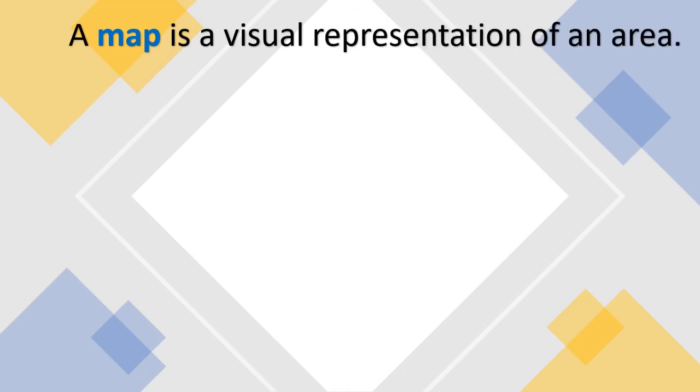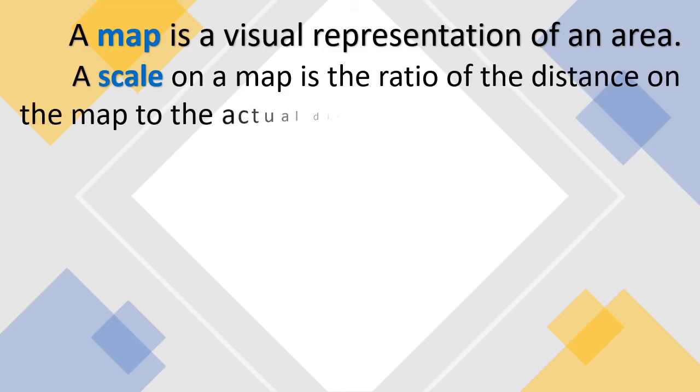In the story problem, Kester used a map. A map is a visual representation of an area. A scale on a map is the ratio of the distance on the map to the actual distance.